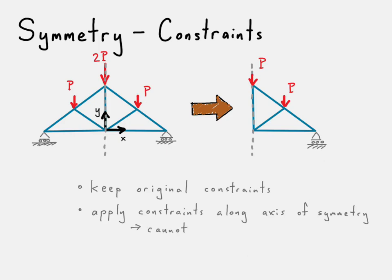And then we apply the constraints along the axis of symmetry. And so, what does that mean? Well, it means that it cannot cross the axis of symmetry, but it can slide along the axis of symmetry.